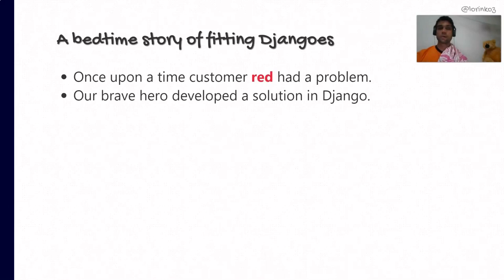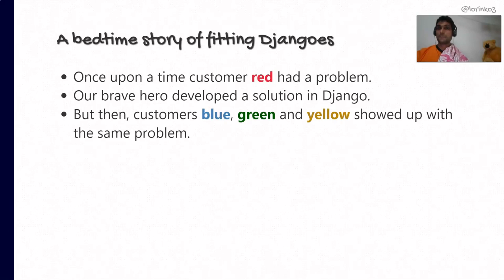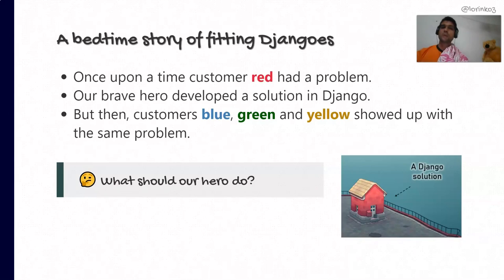Once upon a time, there was a customer — Red — which had a problem, and the brave hero of this story developed a solution in Django. The solution was working great, was properly deployed, but right after, customers Blue, Green and Jello showed up with exactly the same problem. Exactly the same problem. No major modification required.